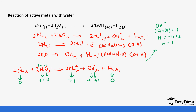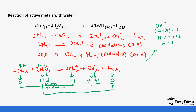For sodium, the oxidation number increases from zero to positive one — so it undergoes oxidation, making it the reducing agent. For hydrogen in water, one hydrogen atom changes from positive one to zero in hydrogen gas, which is a decrease in oxidation number — so it is reduction. The other hydrogen remains at positive one in hydroxide and does not change, so we focus on the one that does. This decrease tells us water is the oxidizing agent.